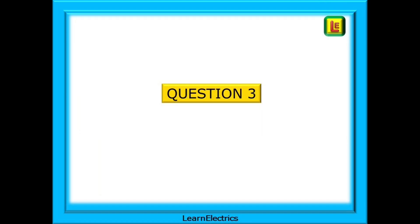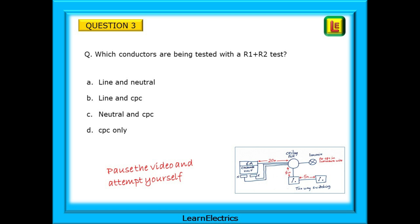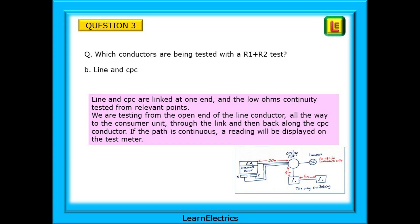Question 3 is next. We are asked which conductors are being tested with an R1 plus R2 test. Again pause the video and find the answer. The answer is B. We are testing the line and CPC conductors. Line and CPC are linked at one end and the low ohms continuity is tested from relevant points. We are testing from the open end of the line conductor all the way to the consumer unit through the link and then back along the CPC conductor. If the path is continuous a reading will be displayed on the test meter.